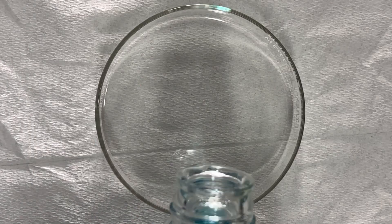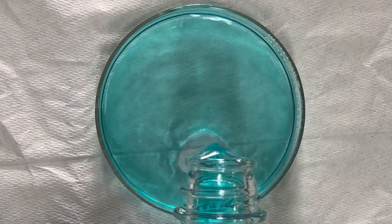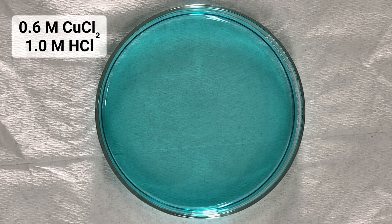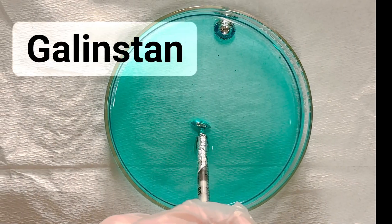This remarkable experiment is really quite easy to set up. You start by adding a solution of copper-2 and hydrochloric acid to a petri dish, and then just inject in some gallenstan.